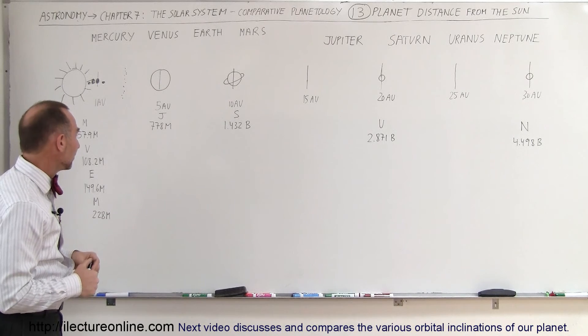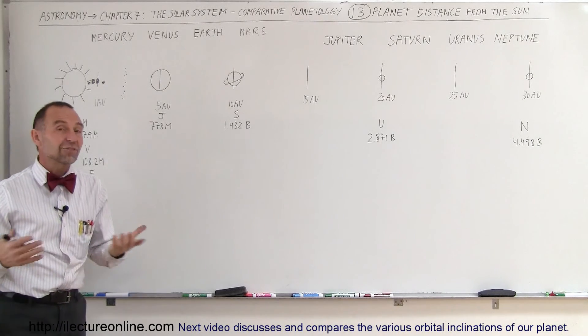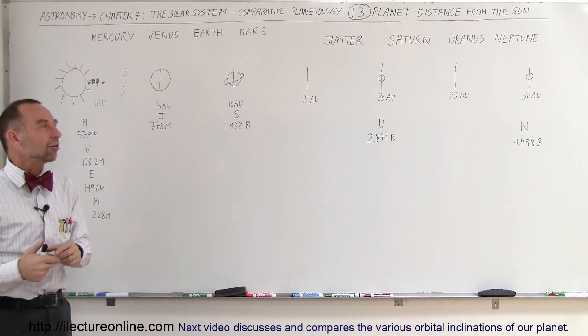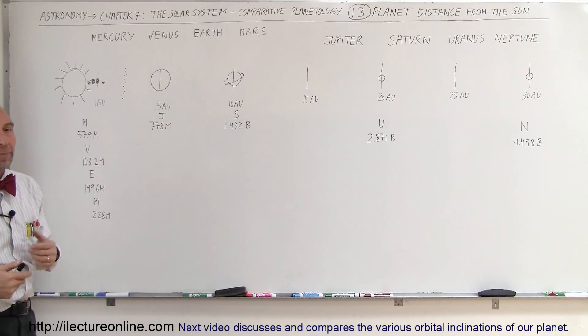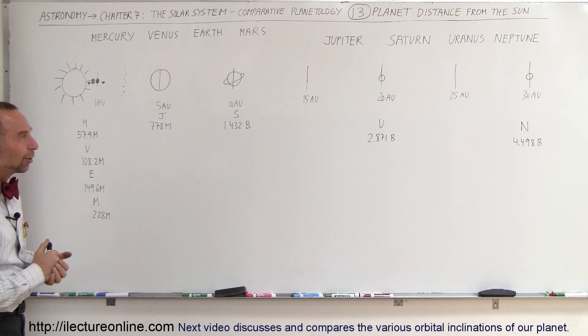So that gives you a feel for the size of the solar system, at least the inner solar system and where the gas planets are, and it gives you a feel of the relative distances between the planets and the Sun. And that's what it looks like. Thank you.